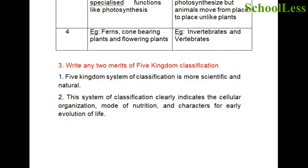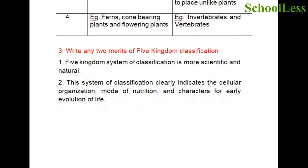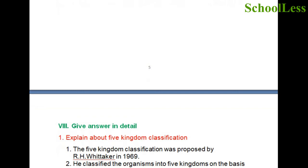Question 3: Write any two merits of five kingdom classification. The five kingdom system of classification is more scientific and natural. This system clearly indicates cellular organization, mode of nutrition, and characters for early evolution of life.